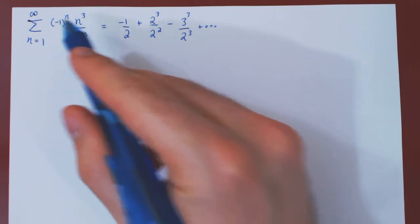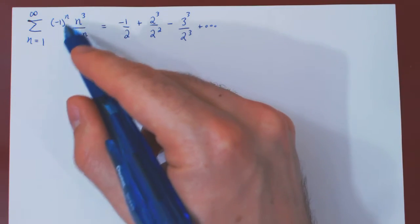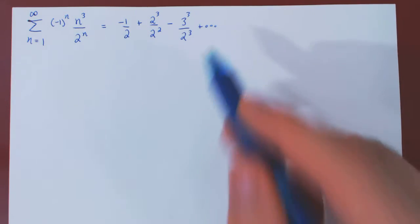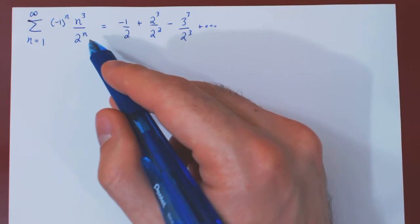Now, we clearly have an alternating series because of the negative 1 to the n, and so we could attack this series with the alternating series test.